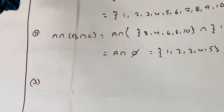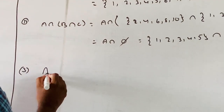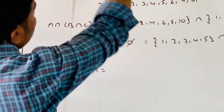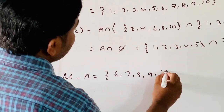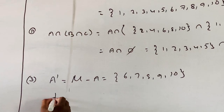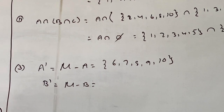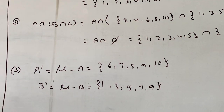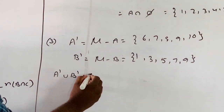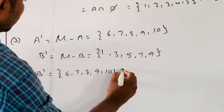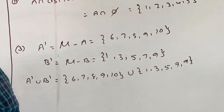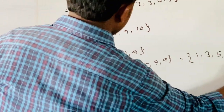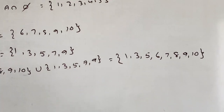Third: A dash union B dash. First, A dash equals mu minus A equals {6, 7, 8, 9, 10}. Next, B dash equals mu minus B equals {1, 3, 5, 7, 9}. Then A dash union B dash equals {6, 7, 8, 9, 10} union {1, 3, 5, 7, 9} equals {1, 3, 5, 6, 7, 8, 9, 10}.